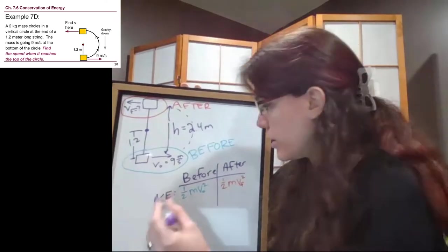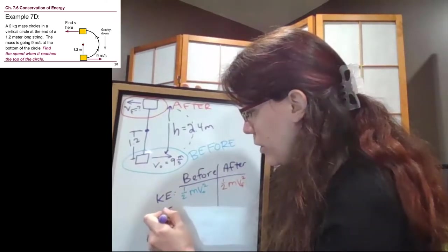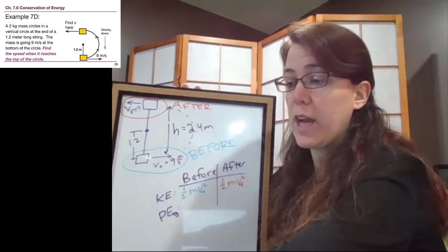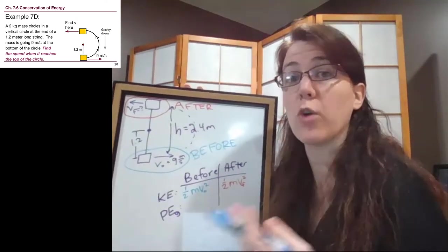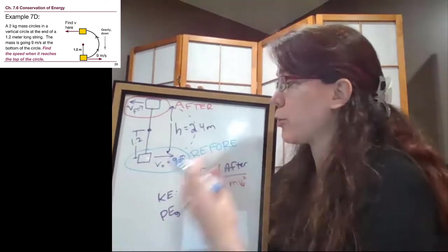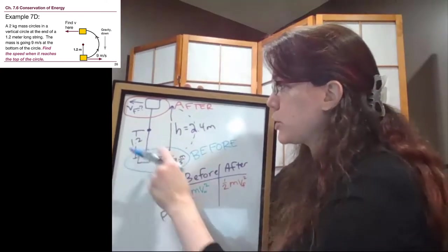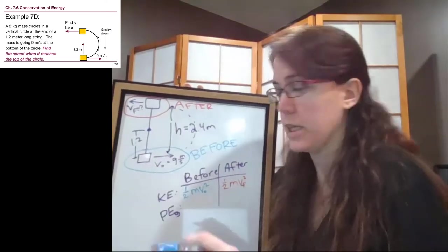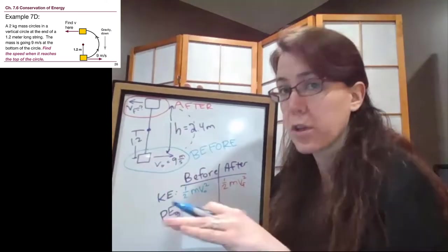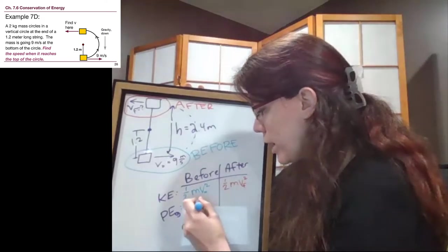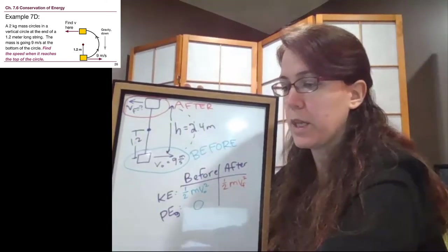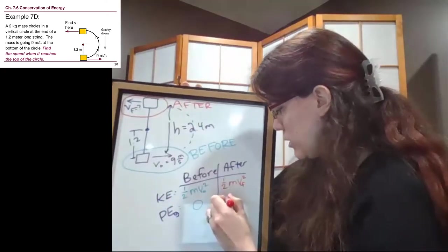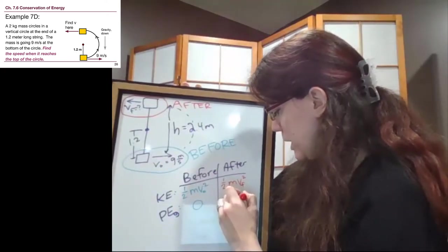All right. The other type of energy that we have so far is the potential energy of gravity. And so that question that we've been asking ourselves are, are we higher than we are at other points in the problem? At the before picture, at the bottom of our circle, it doesn't matter whether we're on the ground or not. At the before picture, we are the lowest point in the problem. We are not higher than we will be later in the problem. In the after picture, we are higher up than we were, so we'll write mgh.